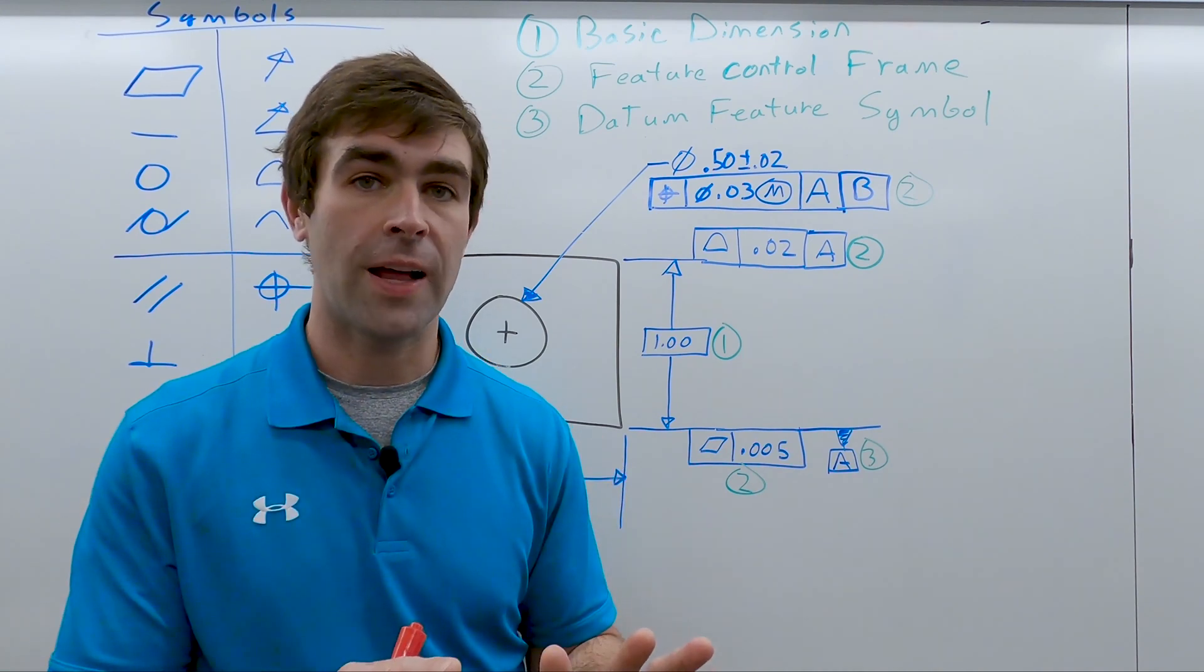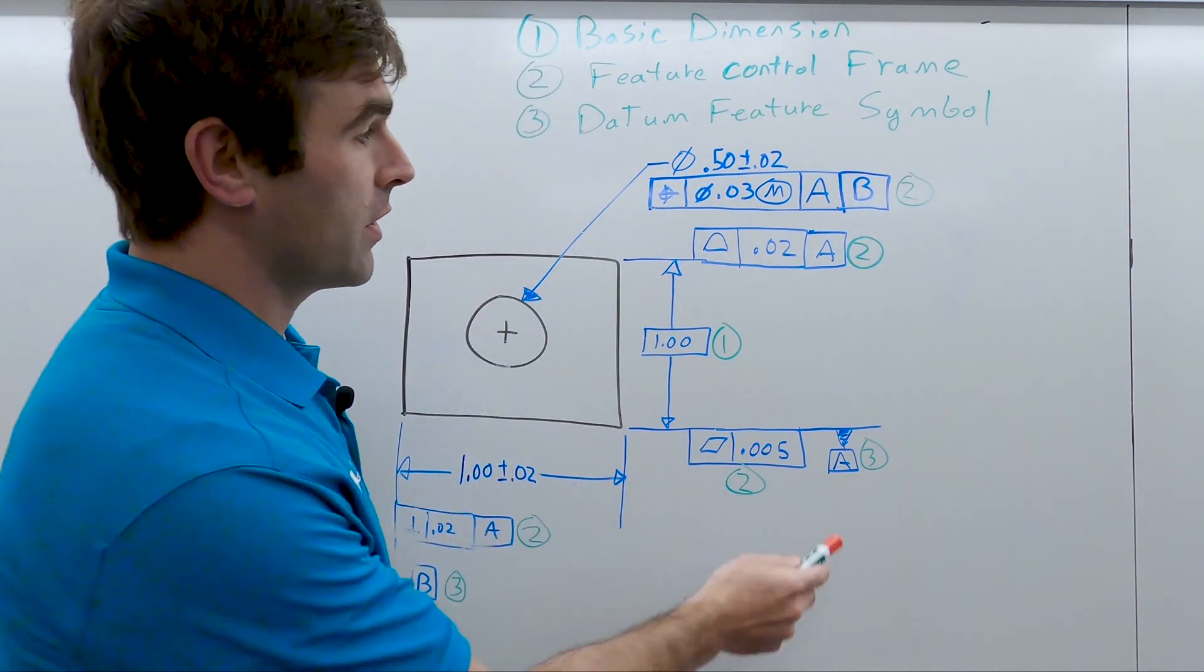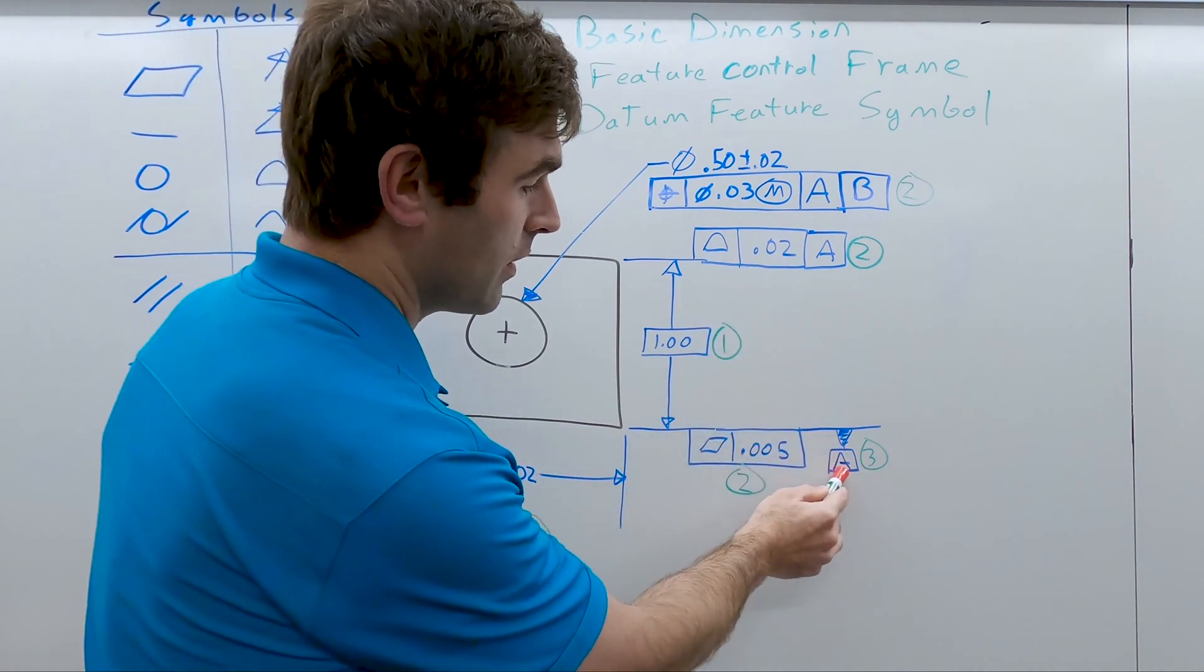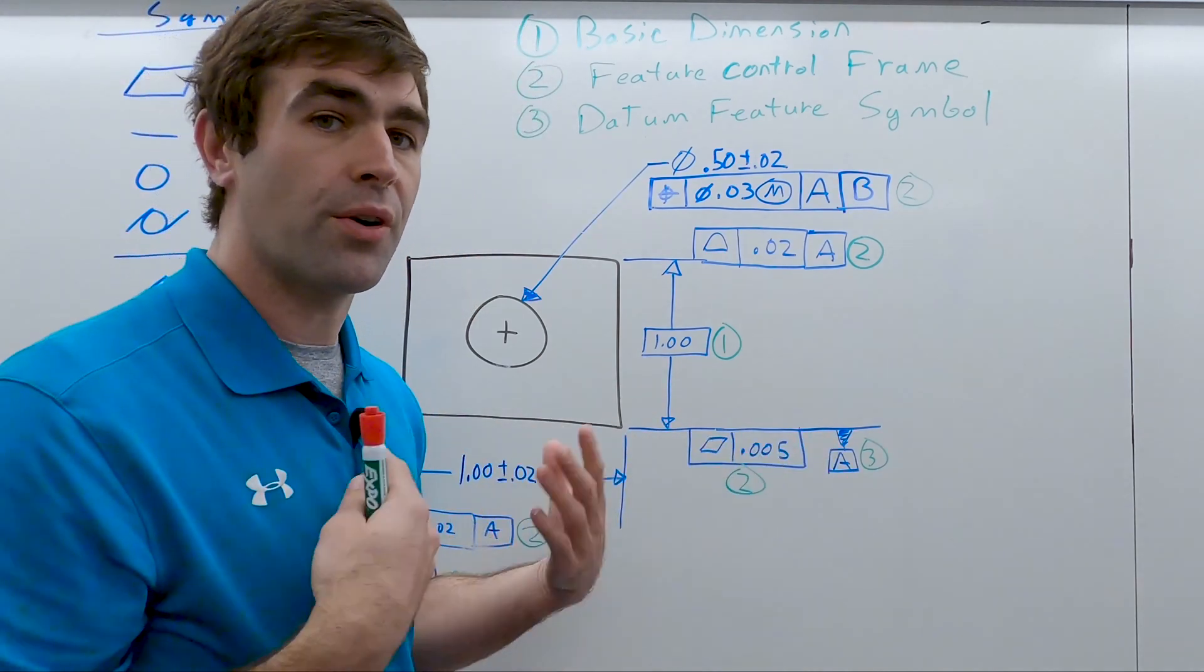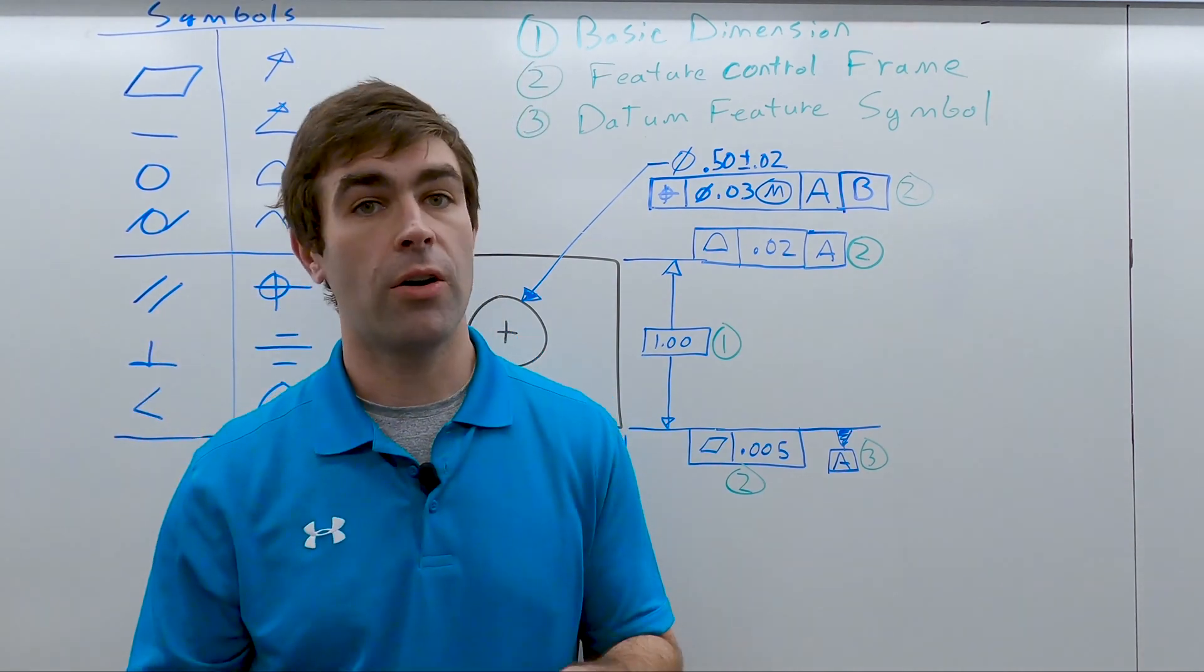I know it seems like a lot, but it's really not that bad. All it means is if we want to check this tolerance, we put this datum feature onto a flat plate, serves our datum feature simulator, and we're good to take our measurements.